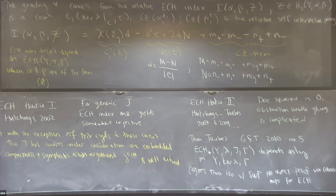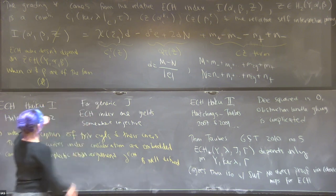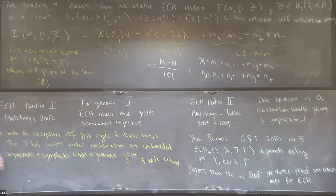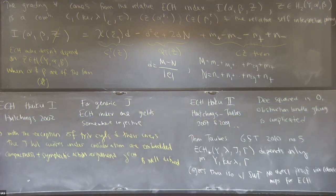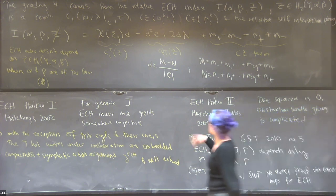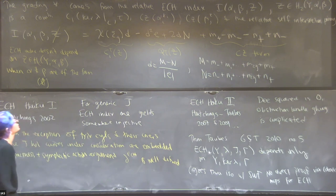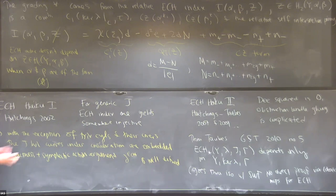Those are the ingredients that go into ECH. Trying to understand what the ECH index is for two orbit sets is pretty challenging. For pre-quantization bundles, you have really nice control on the dynamics and how it relates in terms of multiplicities of the fiber. You can explicitly find the surfaces needed to compute the relative self-intersection pairing, the relative first Chern class, and everything is relatively computable.